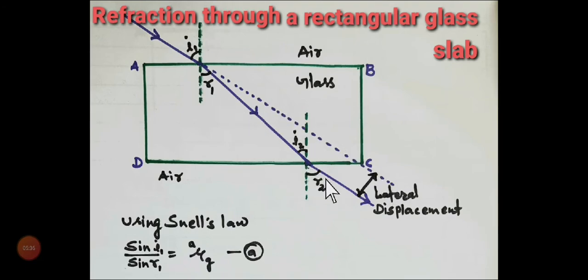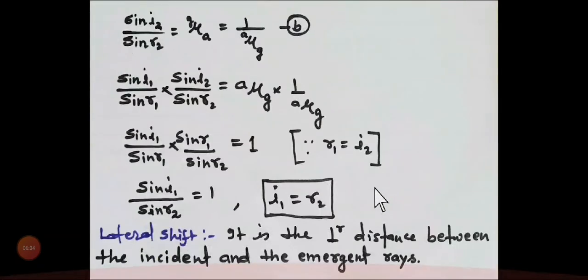Because of this glass, there is deviation in its path. The ray deviated two times, once in the glass and then again after entering air. It deviated two times. And finally, what happened? It is now parallel to the initial ray. This line is now parallel to the initial direction of the incident ray. And there is a shift. The ray was coming through this dotted line, but actually it shifted and is coming through this line.